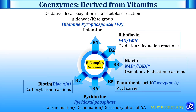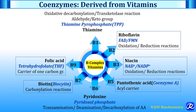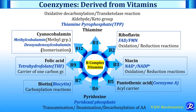Vitamin B7, biotin, has coenzyme biocytin, involved in carboxylation reactions. Vitamin B9, folic acid, has coenzyme tetrahydrofolate (THF), which is a carrier of one-carbon groups. Vitamin B12, cyanocobalamin, has two coenzymes: methylcobalamin, involved in methyl group transfer, and deoxyadenosylcobalamin, involved in isomerization.